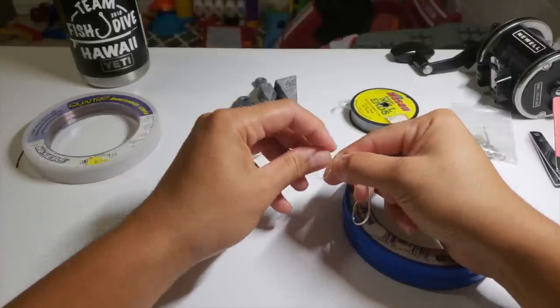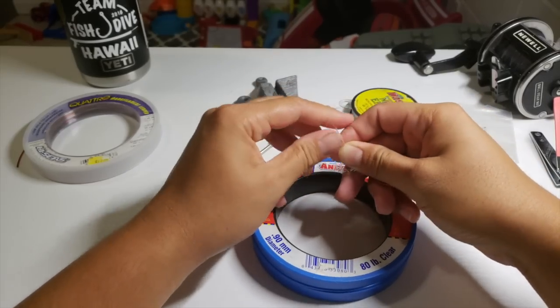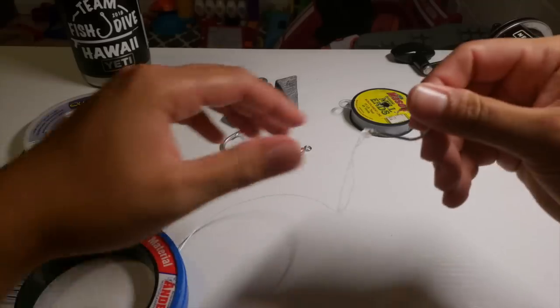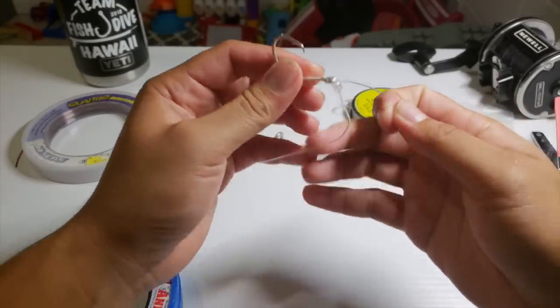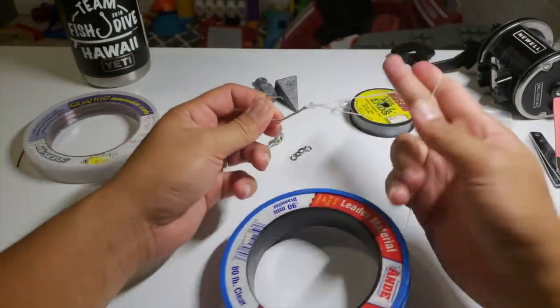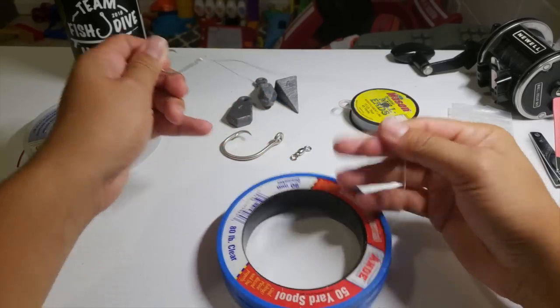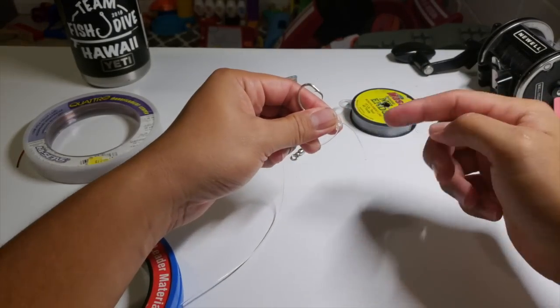at least four or five times. The more the merrier, but you don't want to get too crazy because you will run out of line. Usually I'll just bite this end right here. Very simple, kind of sloppy, but you get the idea. Really tight. That's not going anywhere. Pretty confident that this is going to land a fish and not break or come loose. So let's cut off the excess right here.